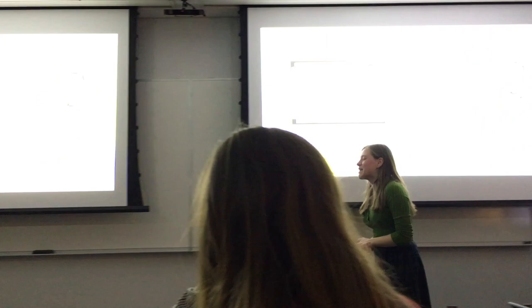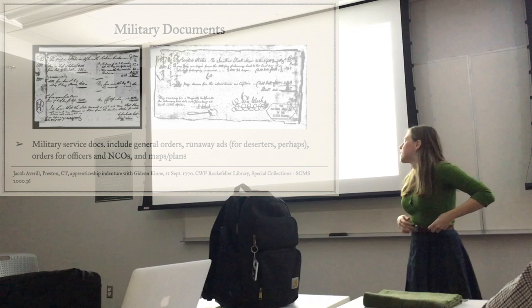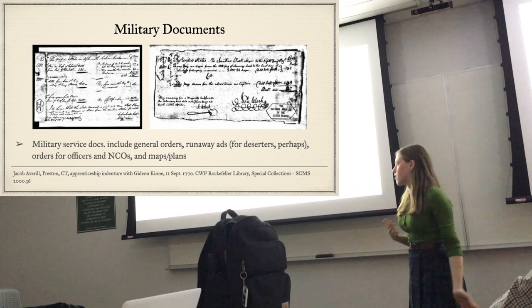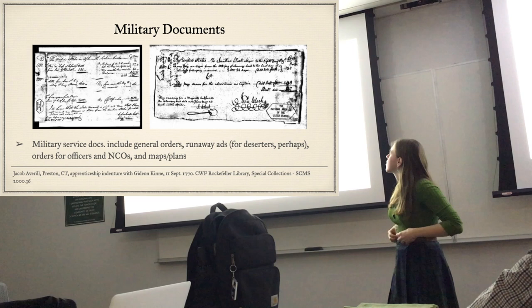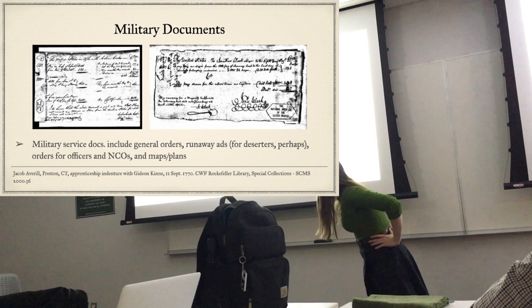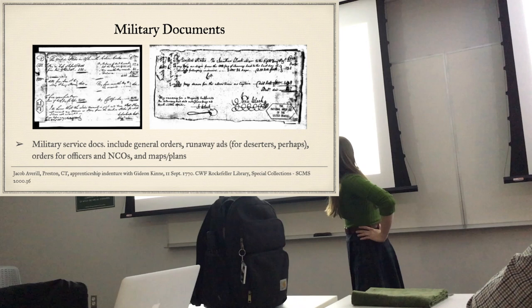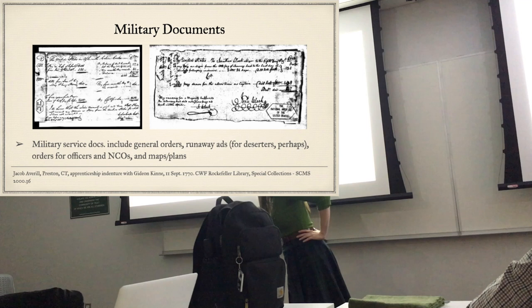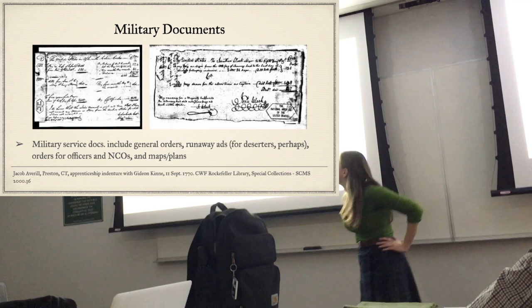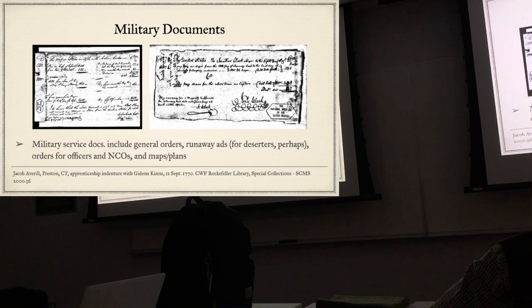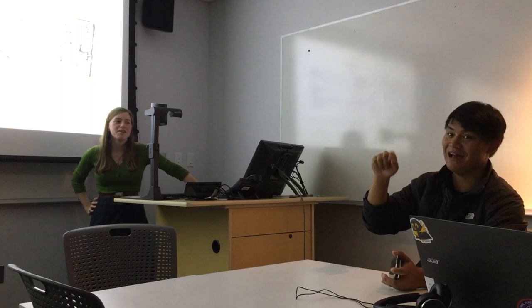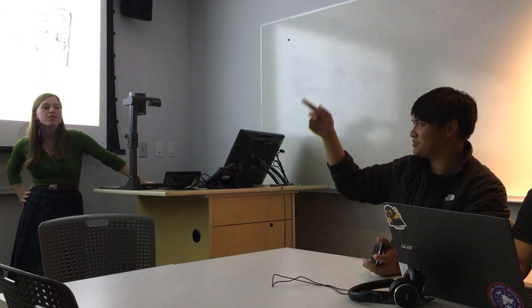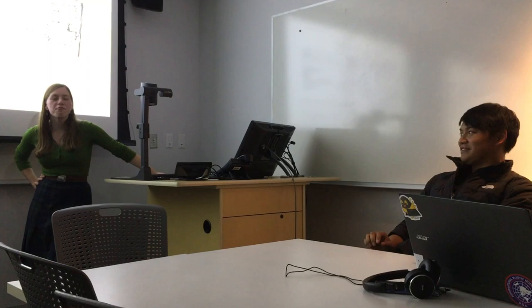Then there are military documents, which I don't know much about - if you want to know more, ask Matt. They include general orders, runaway ads for deserters, orders for officers and NCOs, and occasionally maps or plans depending on your rank. I pulled a couple off a database through Ancestry and the Library of Congress - one appears to be a bill for pension, and the other is a list of names or functions. For officers, there are also inventories - boring lists and accounting stuff. And for refugees, you might have an inventory from your house, which gives a record of all items in specific rooms.